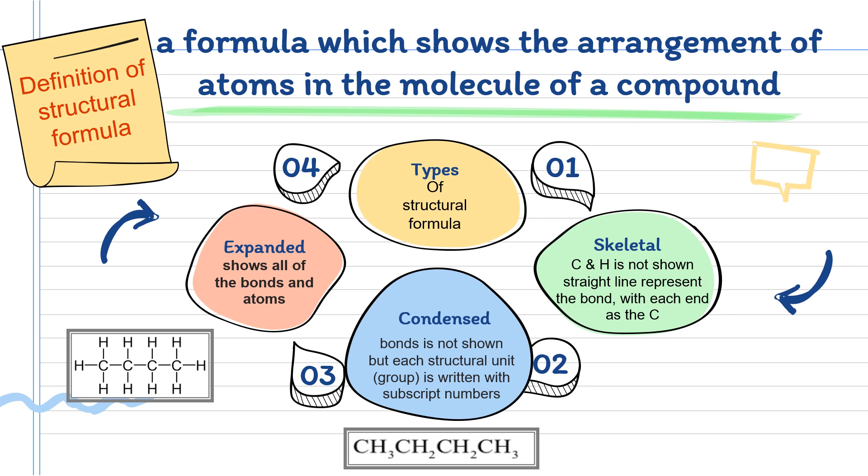Carbon atoms are assumed to be at the beginning and end of a line and where two or more lines meet. This is the skeletal structure of butane.